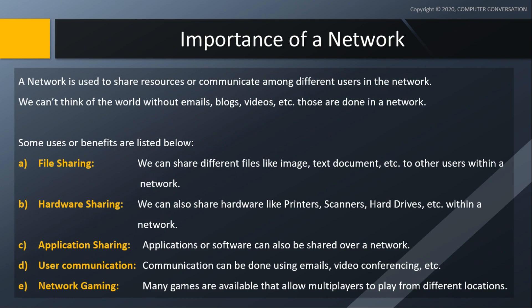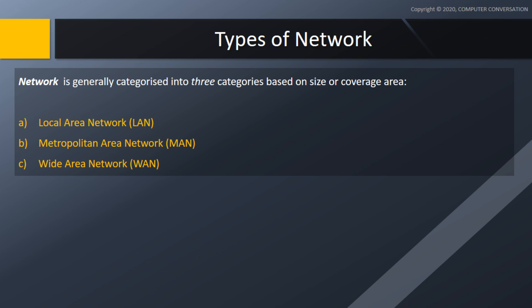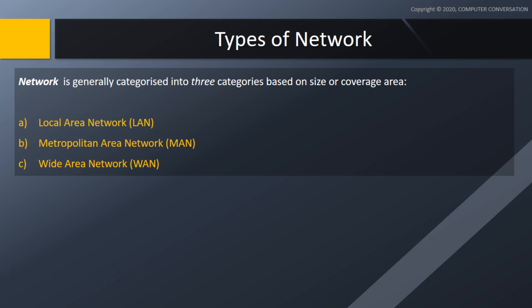Now a network can be of different types. There are generally three types of network based on coverage area. There are also many more types found on the internet, but they are sub-classifications of these three types only. The three types are: Local Area Network or LAN, Metropolitan Area Network or MAN, and Wide Area Network or WAN.